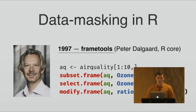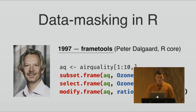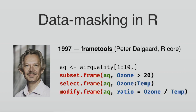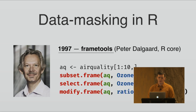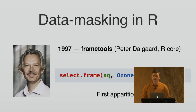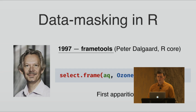Then R was being developed in the nineties, and Peter Dalgaard, who is a member of R Core, published the frametools package, which was really foundational for R and for the Tidyverse. It had functions like subset_frame, select_frame, and modify_frame — the same kind of functions we have in dplyr like filter, select, and mutate. You could use data masking to filter rows, select columns, and modify columns inside the data frame. And that was the first operation of selections, which is a little bit different from data masking. You can use the colon operator to select a range of contiguous variables in your data frame.